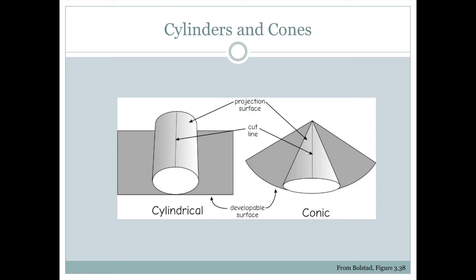Here's an example of how we could flatten out a cylinder or a cone. We put the globe in the middle of the cylinder, project onto the cylinder, then cut along the dotted line and flatten it out into a flat surface — which becomes the map projection. Similarly, on the right, we start with a cone sitting on top of the globe, project the map from the globe onto the cone, cut along the dashed line, and then we have a flat developable surface made from the cone.